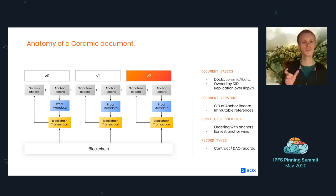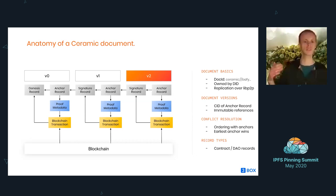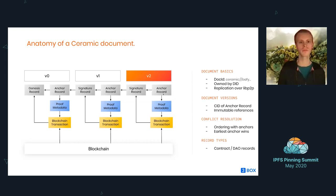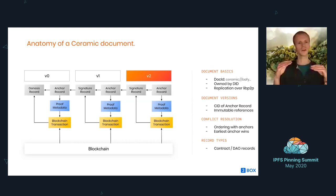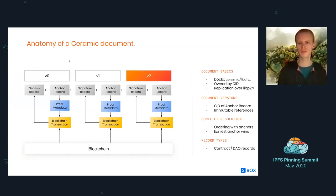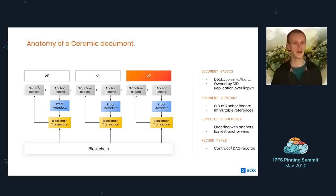That document ID is always the same. When I come online and want to know the state of a given document, I can resolve the Genesis record using the doc ID, then ask the network for more recent state. Other nodes reply with updates, and I can verify the whole log of records. If I get a conflicting log with two different paths, I check that both updates are valid and signed by the correct key, then use the one anchored earlier on the blockchain as the conflict resolution mechanism. Also, the Genesis record specifies the owner of the document — usually a DID — and each signature record in updates must be signed by the owner DID to be valid.